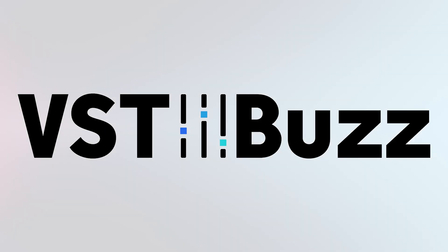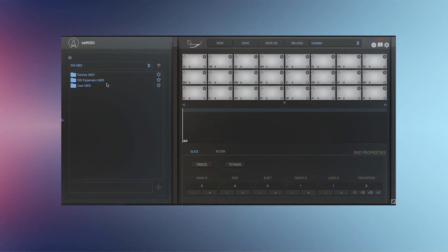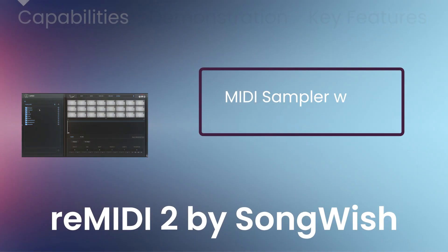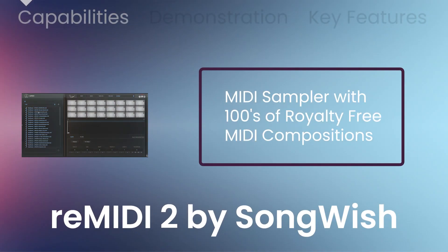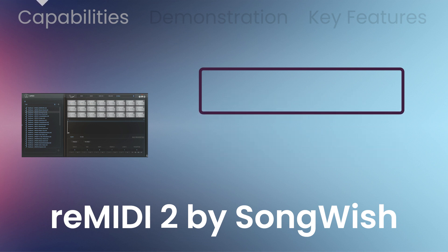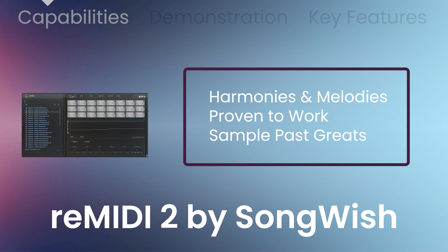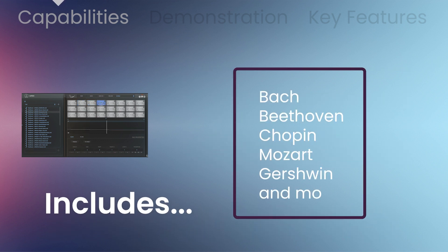VST Buzz presents 78% off Remedy 2 by Songwish. It literally cuts to the core of the problem of finding inspirational musical materials by providing harmonies and melodies that are proven to work, enabling you to sample the royalty-free compositions of past greats — over 150 composers: Bach, Beethoven, Chopin, Mozart, Gershwin, and more.